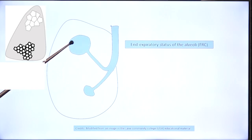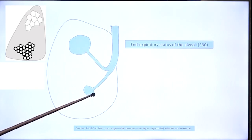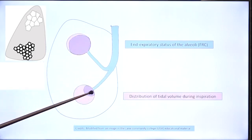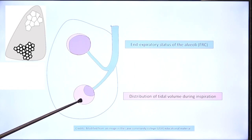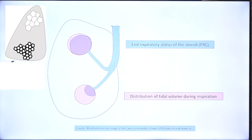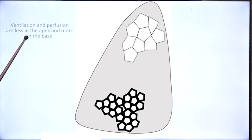Here is a balloon that is partially expanded already and therefore more tense than this less expanded balloon. Obviously the less expanded balloon is more compliant, and the new air will preferentially go into the base rather than the apex. Therefore ventilation — the actual amount of new air that enters the lung — is also more at the base than the apex. Perfusion is also more at the base, so both ventilation and perfusion are less in the apex and more in the base of the lung.